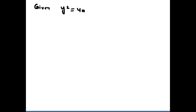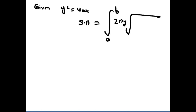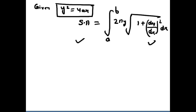y² = 4x is given. We need to differentiate x. The surface area formula involves the integral of 2πy under root 1 plus (dy/dx)² dx. Now, dy/dx: if the curve equation is y² = 4ax, and we differentiate, we get 2y dy/dx = 4a.